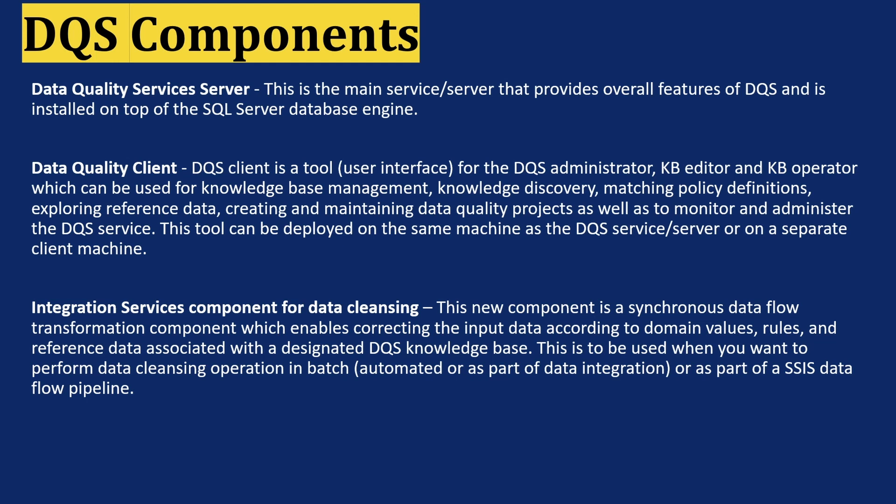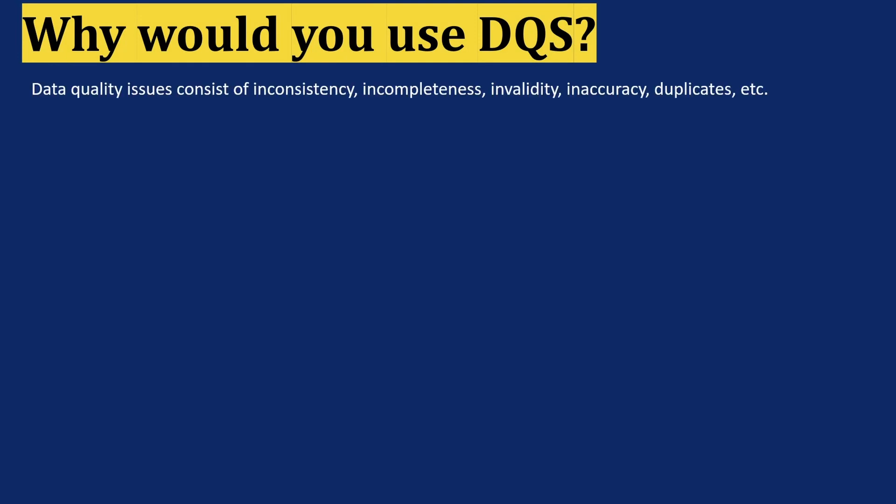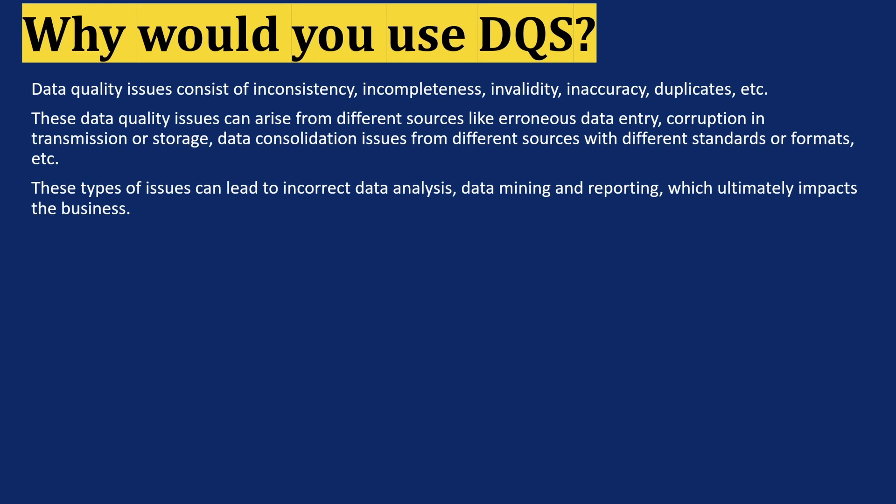Why would you use DQS? Data quality issues consist of inconsistency, incompleteness, invalidity, inaccuracy, duplicates, and many more. These issues can arise from sources like erroneous data entry, corruption in transmission or storage, and data correlation issues from different sources with different standards or formats. These types of issues can lead to incorrect data analysis, data mining, and reporting, which ultimately impacts the business since decisions are made based on these data sets.